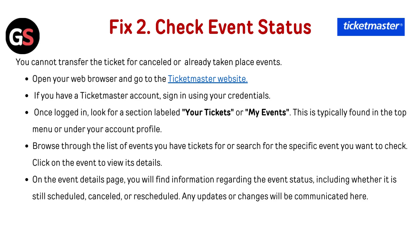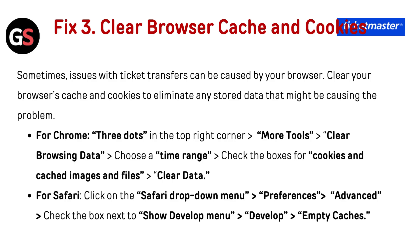Fix two: check event status. You cannot transfer a ticket for cancelled or already-completed events. Open your web browser and go to the Ticketmaster website. Sign in using your credentials, then look for a section labeled 'Your Tickets' or 'My Events' in the top menu or under your account profile. Browse your events or search for the specific event, click on it, and on the event details page you will find information regarding the event status — including whether it is still scheduled, canceled, or rescheduled.